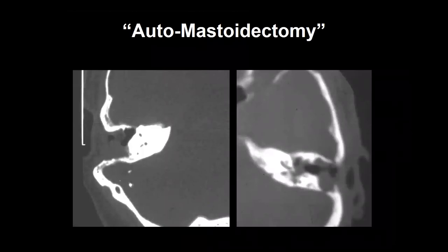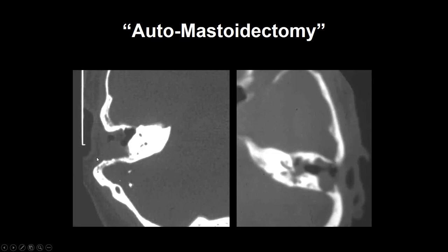One phenomenon that cholesteatoma can produce is called an automastoidectomy. That is, it can erode the bone sufficiently in the mastoid air cells as well as the middle ear cavity so that it looks as if the patient has had a post-surgical canal wall down mastoidectomy — even though this patient has had no surgery. The soft tissue cholesteatoma has eroded all of the ossicles as well as the mastoid air cell septations. Here is another example of cholesteatoma eroding portions of the mastoid with no middle ear ossicles — the so-called automastoidectomy.